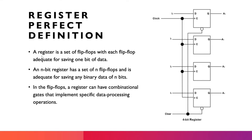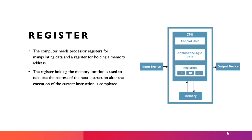A flip-flop stores 0 and 1 — it keeps doing this, and the flip-flop is a way of storing one bit of data. Multiple flip-flops together create a register. If a flip-flop stores one bit of data and we combine four flip-flops, the result is called a 4-bit register.